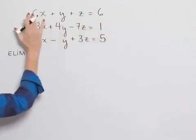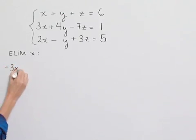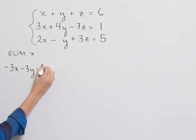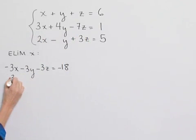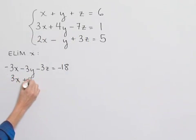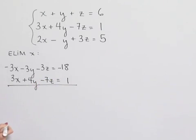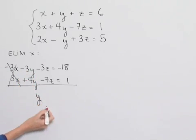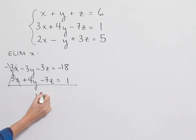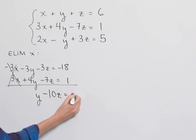We're going to multiply everything in our first equation by negative three, so we'll have negative three x minus three y minus three z equals negative eighteen. We write the second equation down as is: three x plus four y minus seven z equals one. Combining terms, the three x's are eliminated. We have negative three y plus four y, which is y. Negative three z minus seven z, which is minus ten z. And negative eighteen plus one is negative seventeen.